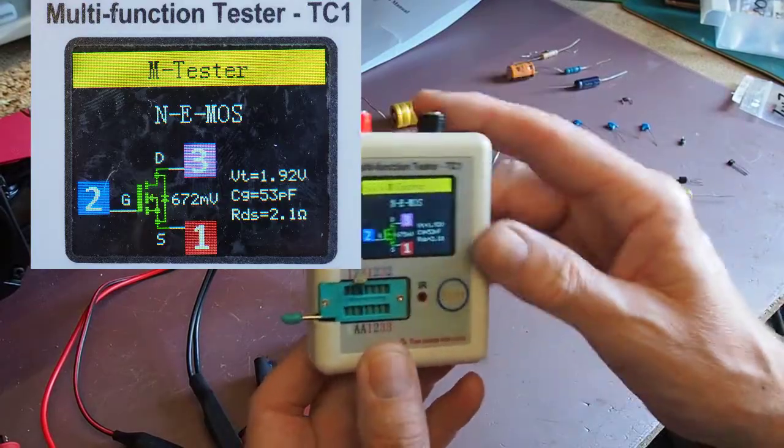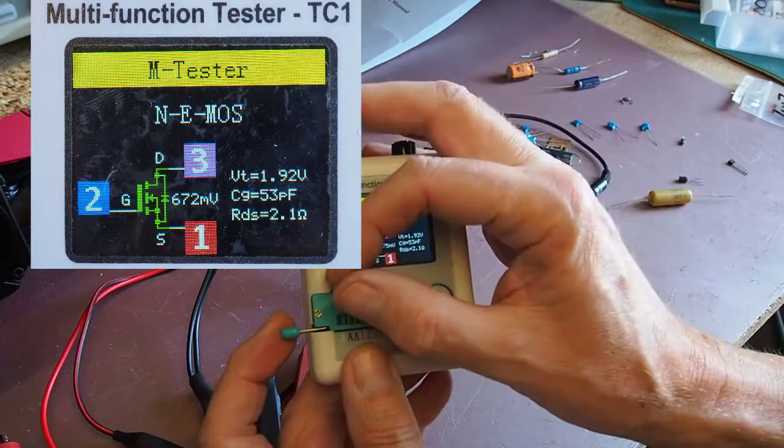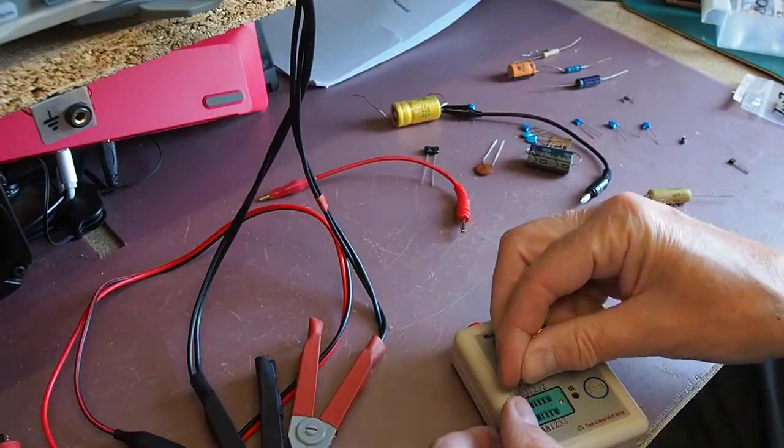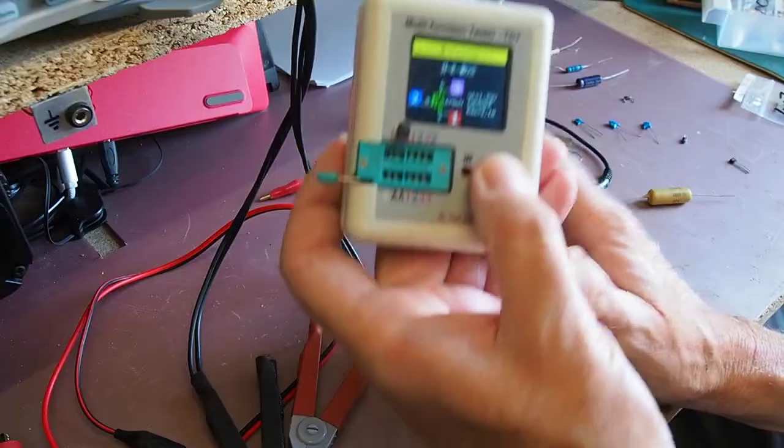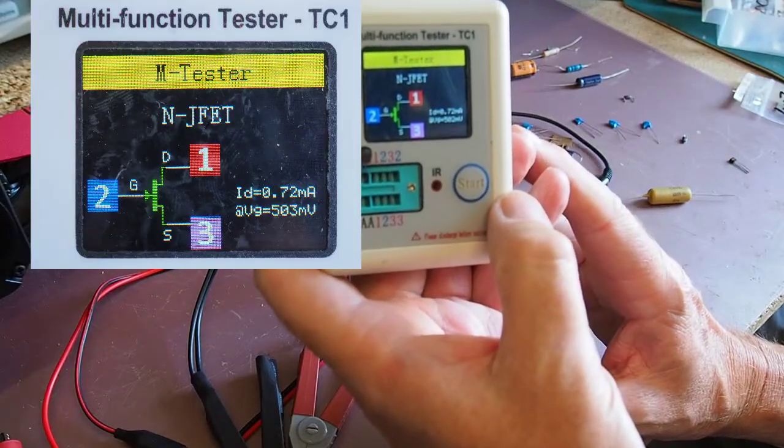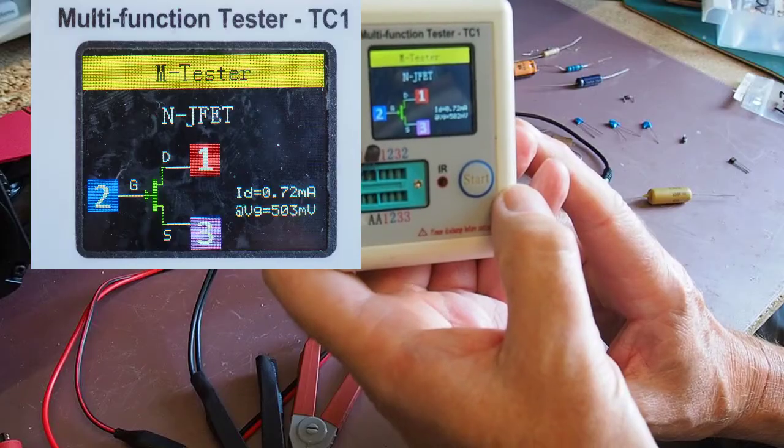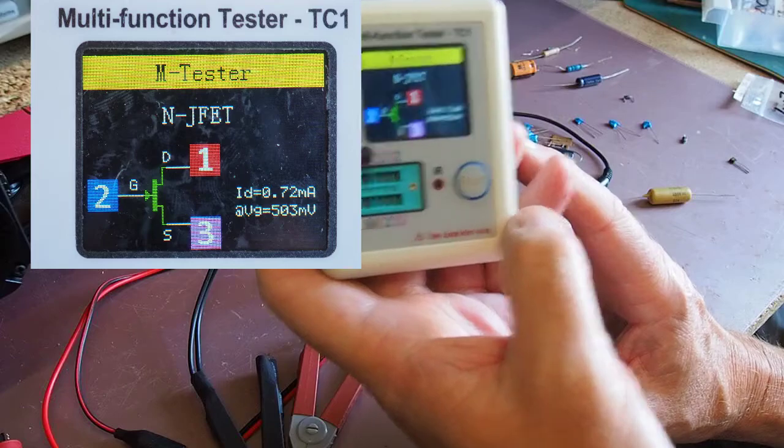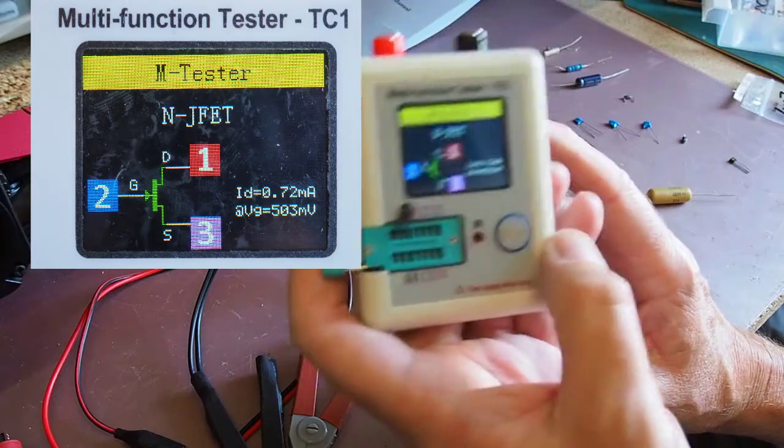So again that's quite nice particularly for a new constructor. And last but not least let's try something else with three legs and see what it makes of that. Yeah it's got that one too, that's an N channel JFET drain gate and source and this symbol is also correct. So personally I think that little ability to identify components like that is very very handy.